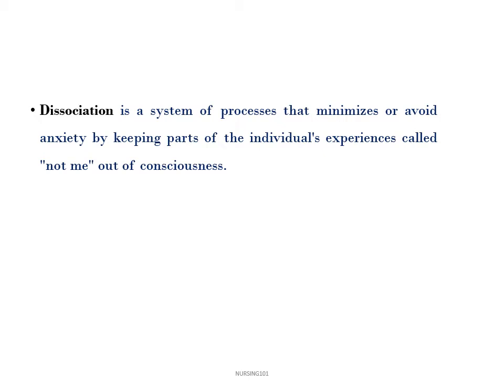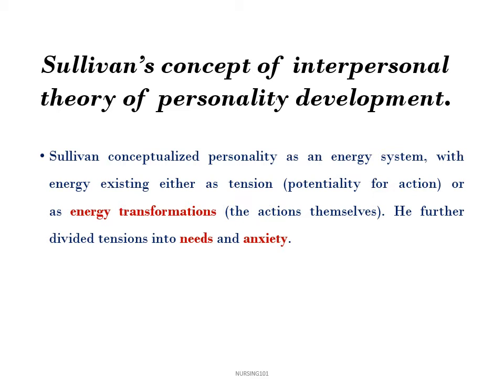Dissociation is the third security operation. It is a system of processes that minimizes or avoids anxiety by keeping parts of an individual's experience — called 'not me' — out of consciousness. Mild dissociation can involve daydreaming, getting lost in a movie or book, or highway hypnosis. But there can be more severe forms of dissociation where a person becomes dissociated from their surroundings, feelings, and emotions, which may require treatment.